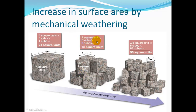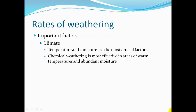Breaking rocks further into quarter-unit cubes gives 64 cubes times six sides, yielding 96 square units. So the more advanced the mechanical weathering, the faster the chemical weathering can act. Other important factors are climate — temperature and moisture are the most critical. Chemical weathering is most effective in areas of warm temperatures and abundant moisture, like South Florida.